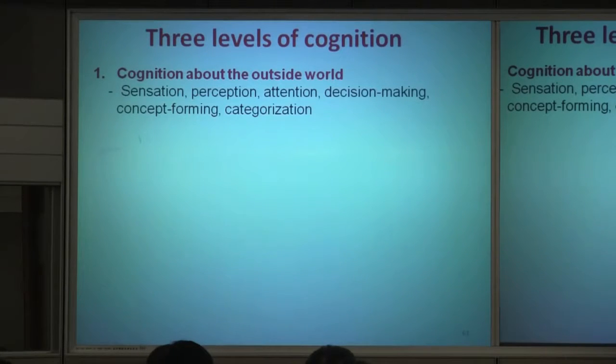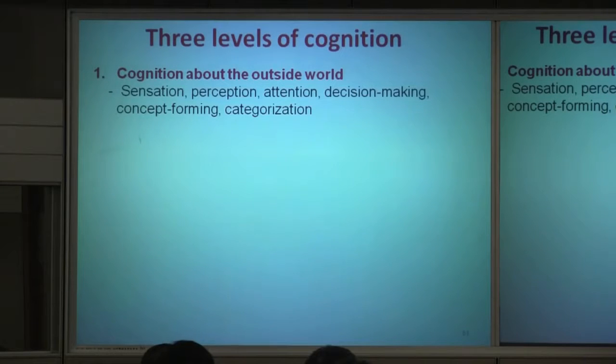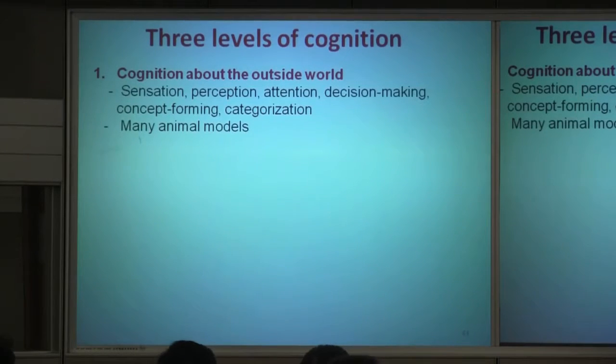This is a desk. That's a desk of the same category. We have a concept of desk, and categorization of different types of animals. Dogs are dogs even though they're different species — this is our concept of categorization, cognition about the outside world. Many animals have this, so when we talk about animal models, you can study this in animals. Even fruit flies have a sophisticated cognitive process, and honey bees have a good cognitive process.